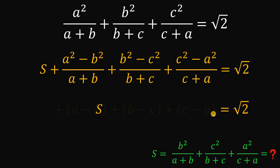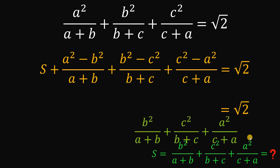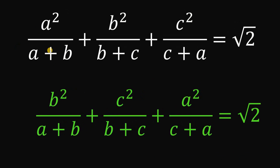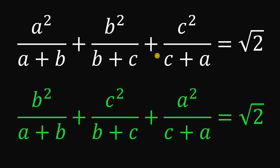So this is just equivalent to s equals square root of 2, and s is the expression we want to evaluate. Therefore, given a squared over a plus b, plus b squared over b plus c, plus c squared over c plus a equals square root of 2, the numerical value of b squared over a plus b, plus c squared over b plus c, plus a squared over c plus a is also square root of 2. And as always, we are done.